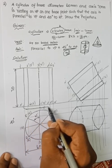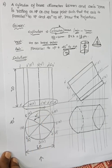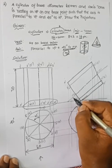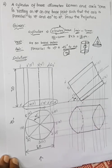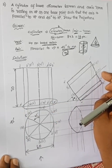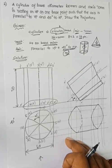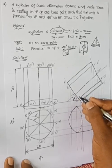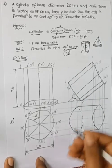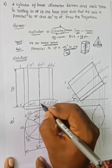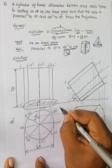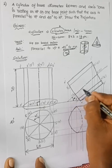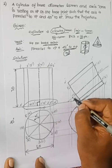In the simple case, the whole base rests on HP. But in our problem, only one base point rests on HP. So we take a point and make an inclination of 45 degrees. The axis and the base make 90 degrees, and the axis is inclined at 45 degrees to HP.